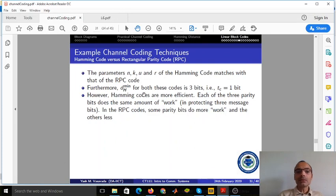Okay, now we have already seen that the parameters—okay, actually not all the parameters, not n, k, and u, but the rate r of the Hamming code and the rate r of the RPC code are identical. n, k, and u for the RPC code is just twice the values of n, k, and u for the Hamming code.